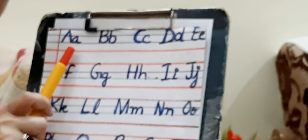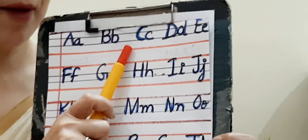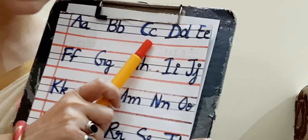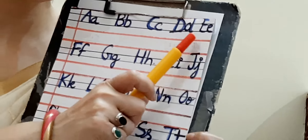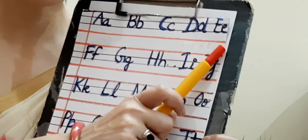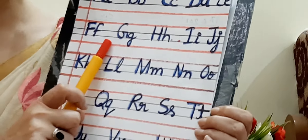Capital A, small a. Capital B, small b. Capital C, small c. Capital D, small d. Capital E, small e. Capital F, small f. Capital G, small g.